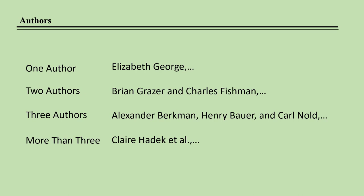Put the word AND between two authors' names, commas between the first two authors, and the word AND between the second and third author if there are three authors listed. Notice that the Chicago Manual of Style uses the Oxford comma. The Oxford comma is a comma used after the penultimate item in a list of three or more items before the word AND or the word OR.